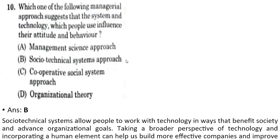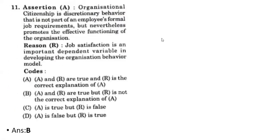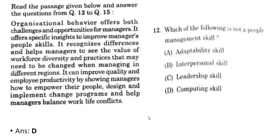Eleventh question — assertion and reasoning: Organizational citizenship is a discretionary behavior that is not part of an employee's formal job requirements but promotes the effective functioning of the organization. The reason is job satisfaction is an important dependent variable in developing the organizational behavior model. The correct option is B — A and R are true but R is not the correct explanation of assertion.